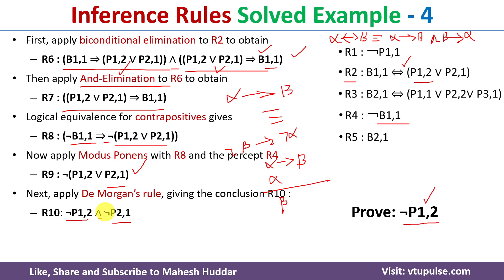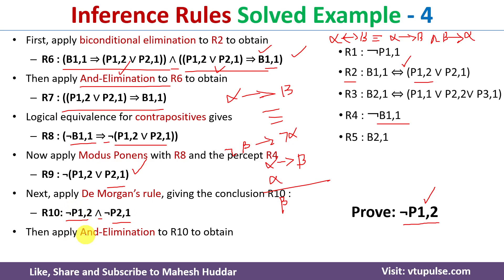We are now very close to the goal. We are expecting negation of P12, and it is present in the conjunction. We apply AND elimination to extract negation of P12 as the final conclusion. This means we were able to prove the required sentence using inference rules.